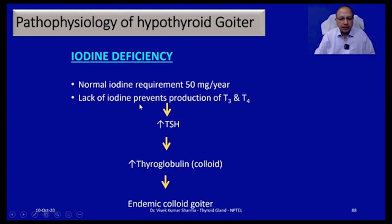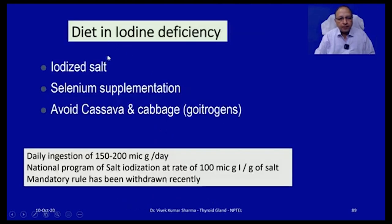Pathophysiology of hypothyroid goiter: in iodine deficiency, lack of iodine prevents T3 and T4 production. Via positive feedback, there is increased TSH synthesis from the anterior pituitary, which keeps stimulating the thyroid gland, leading to colloid and thyroglobulin accumulation — this results in endemic colloid goiter. Iodine deficiency is one of the most common causes of hypothyroidism, which is why iodized salt policy exists. Normal daily iodine requirement is 150–200 micrograms. There are also goitrogens and selenium supplementation to consider.